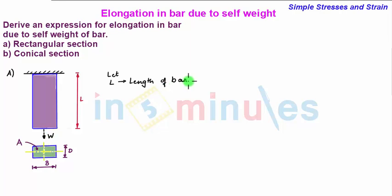Let L be length of the bar in mm and capital W be total weight of bar in newton. Now to determine the elongation due to self weight we again apply elemental approach.